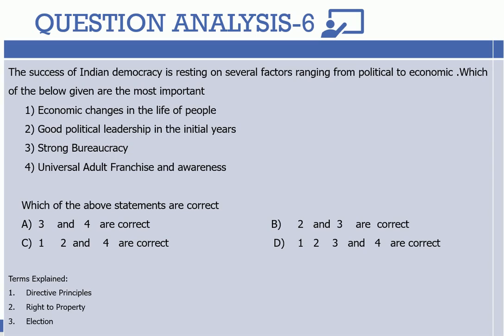So these are the three factors — economic changes in the life of the people, good political leadership in the initial years, and universal adult franchise and awareness — that can be accounted for the success of democracy in India. Naturally, the answer will be C, that is 1, 2, and 4.